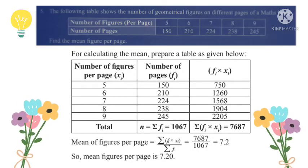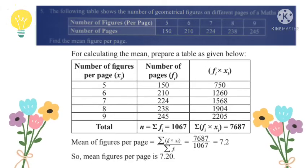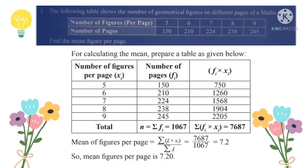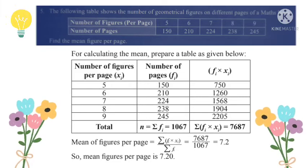Mean equals sigma f times x divided by sigma f, which equals 7687 divided by 1067, which equals 7.2.